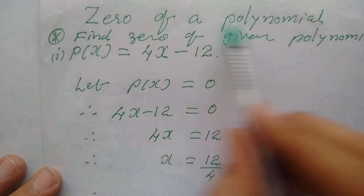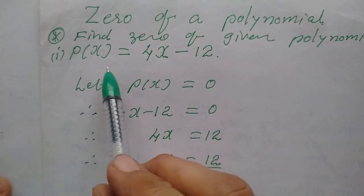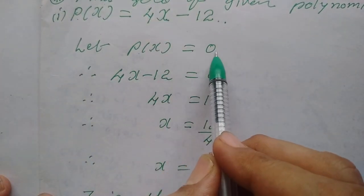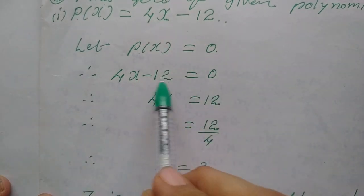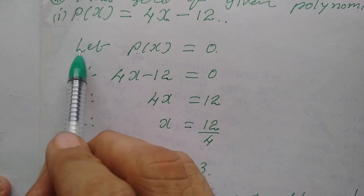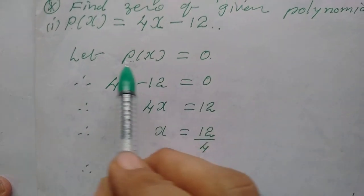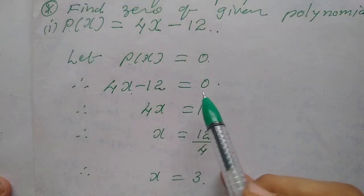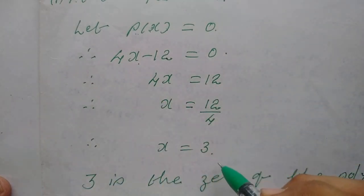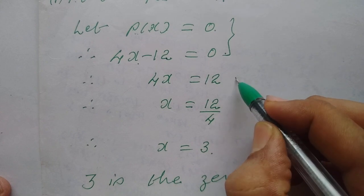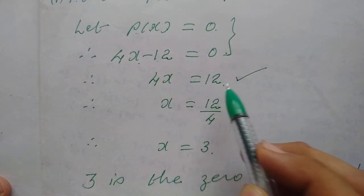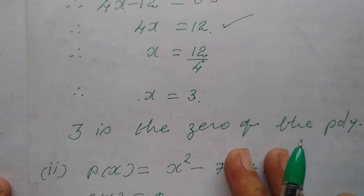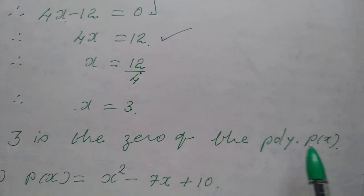Let us understand zero of a polynomial with a simple example. Find zero of the given polynomial p(x). The method is: let p(x) equal to 0. p(x) is 4x minus 12. So 4x minus 12 equal to 0. Bring 12 to the other side, then divide by 4. So x equal to 3. Therefore 3 is the zero of the polynomial p(x).